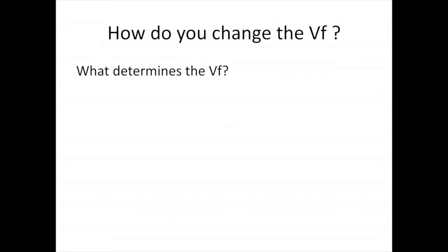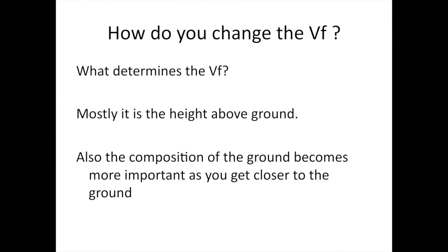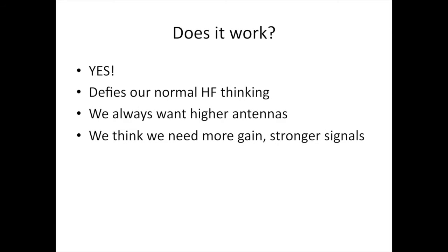Of course now, how do we change the velocity factor? Well what does determine the velocity factor? Mostly it is the height of the wire above the ground. Also the composition of the ground becomes more important as you get closer to the ground. The composition of the ground is not quite as significant as the height above ground. So let's ask the question one more time. How do you change the velocity factor from 90% to 75%? Very simple. Run the wire on the ground. Does it work? Yep.